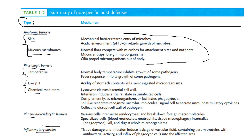For skin specifically: it's a mechanical barrier that retards entry of microbes, and it has an acidic pH of about 3 to 5 which retards microbial growth. The mucous membrane has normal flora that compete with microbes for attachment sites and nutrients, and mucus traps foreign microorganisms. The cilia present in various parts of our body trap microorganisms in their hair-like structures and propel them out of the body.